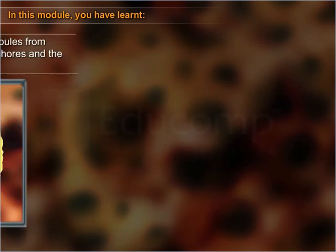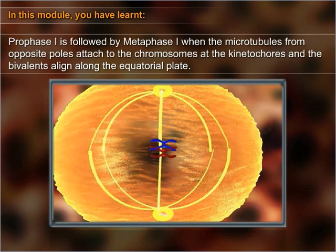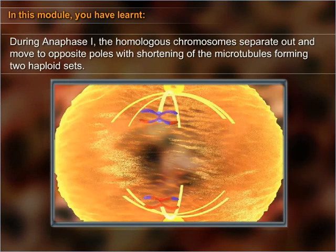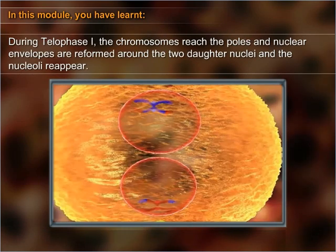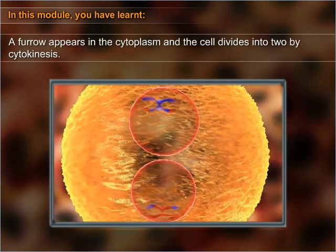By diakinesis, the chromosomes are fully condensed, the nucleolus and nuclear membrane dissolve, and the mitotic spindle begins to assemble. Prophase one is followed by metaphase one, when the microtubules from opposite poles attach to the chromosomes at the kinetochore and the bivalents align along the equatorial plate. During anaphase one, the homologous chromosomes separate and move to opposite poles, forming two haploid sets. During telophase one, the chromosomes reach the poles, nuclear envelopes are reformed around the two daughter nuclei, and the nucleoli reappear. A furrow appears in the cytoplasm and the cell divides into two by cytokinesis.